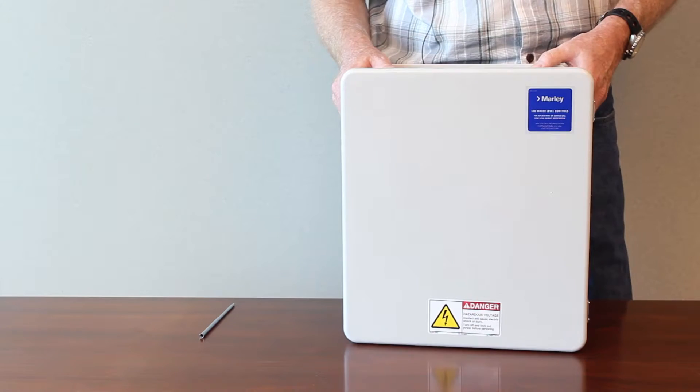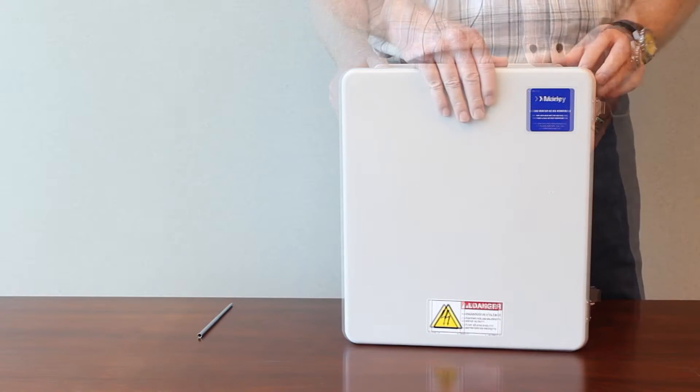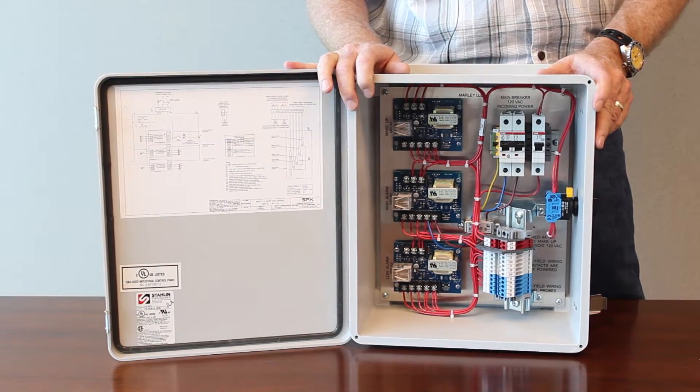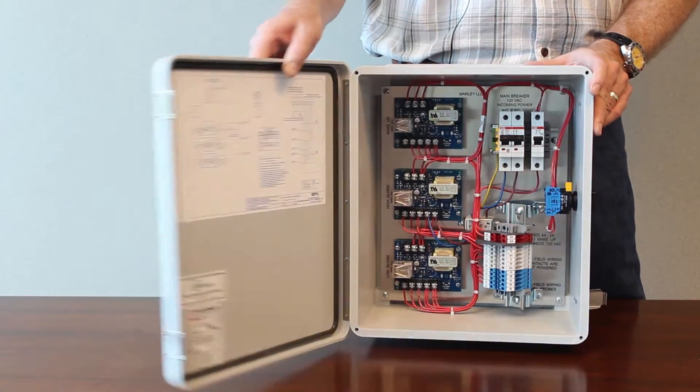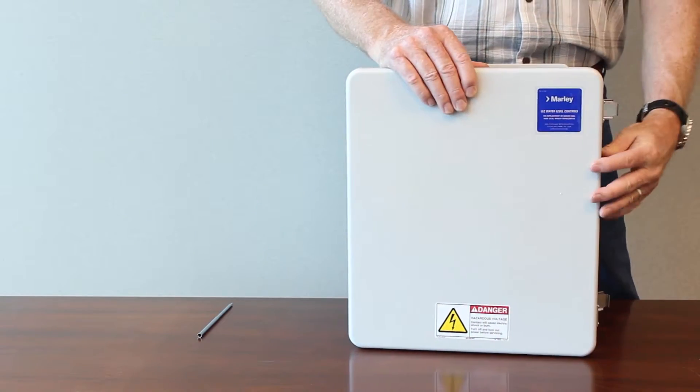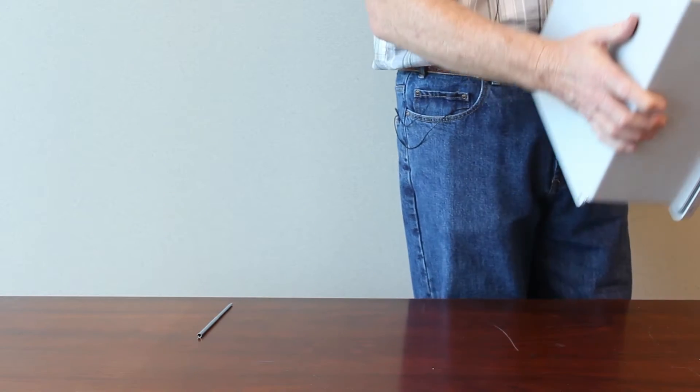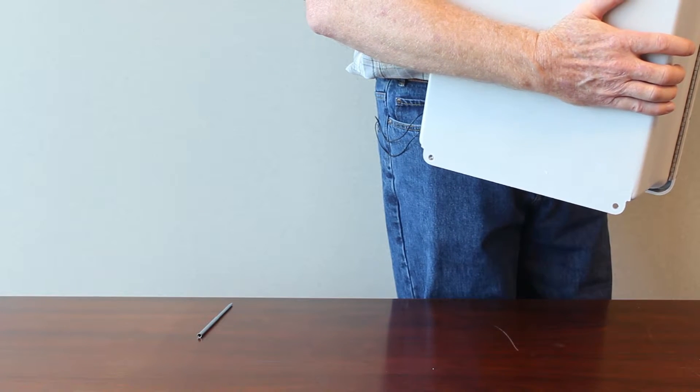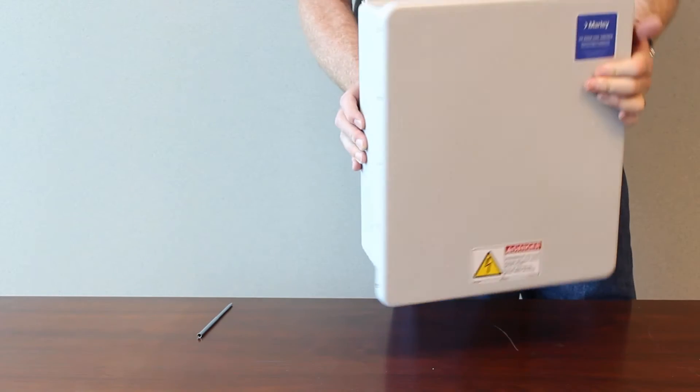The control panel is a NEMA 4X fiberglass outdoor control panel. I'm going to swing open the door here showing the internal cards and the relays that are inside the control panel. Proper mounting of this control panel is in this fashion right here. You'll see the back has mounting feet on it for installation onto the cooling tower or support structure.